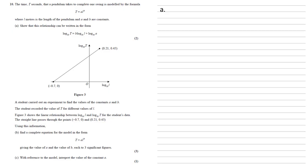The time t seconds that a pendulum takes to complete one swing is modelled by the formula t equals a l to the power of b, where l metres is the length of the pendulum and a and b are constants.